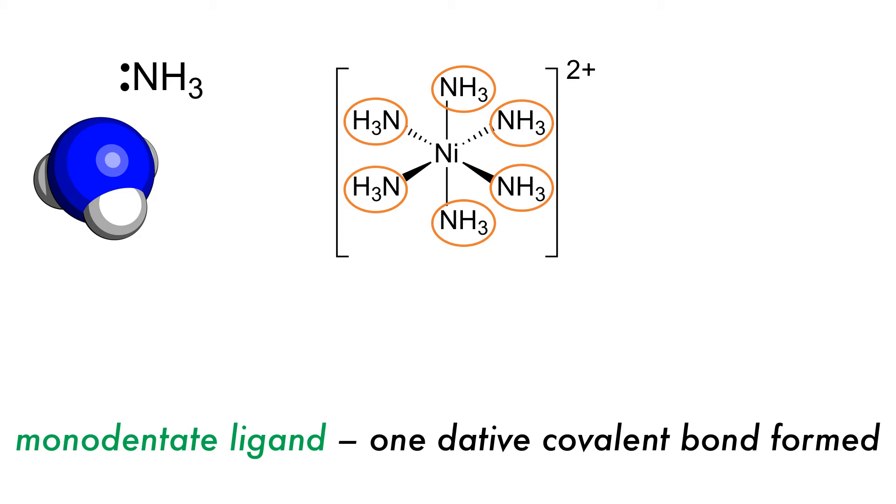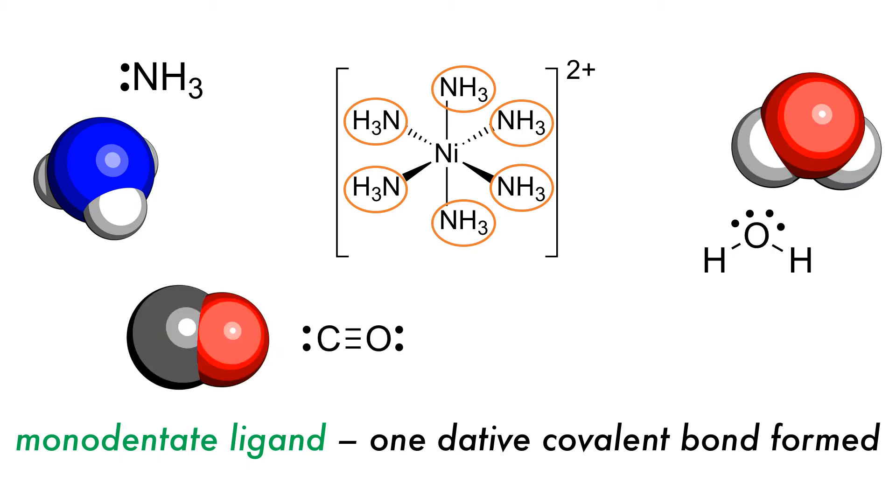Other common monodentate ligands are water, known as aqua, carbon monoxide, known as carbonyl, and cyanide, known as cyano.